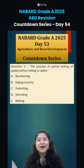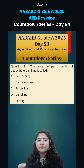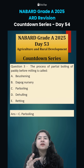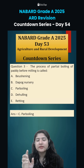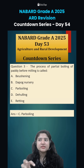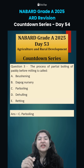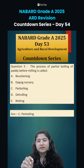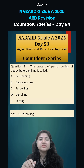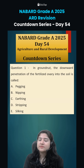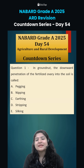Question number three: the process of partial boiling of paddy is known as 'parboiling', and it is quite common in South India. In this process, rice with its husk (paddy) is partially boiled without removing the husk. This changes the nutritive value and fragrance of the rice, and also prevents the rice from breaking into small pieces during milling.